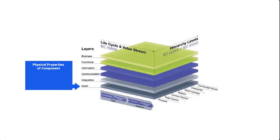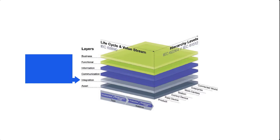The asset layer represents the physical properties of the component — for example, metal parts, circuit diagrams, QR codes, documents, etc. The integration layer provides information about the component in a form that can be digitally processed so that it can be integrated with other components. In Industry 4.0, this would typically be implemented as a digital twin of the component. An example standard in this context is the asset administration shell, which we'll look at in detail in later sections. It is through this integration layer that components that are not capable of communicating for themselves — such as fully mechanical components and human beings who interact via human machine interface — can be involved in the information world.